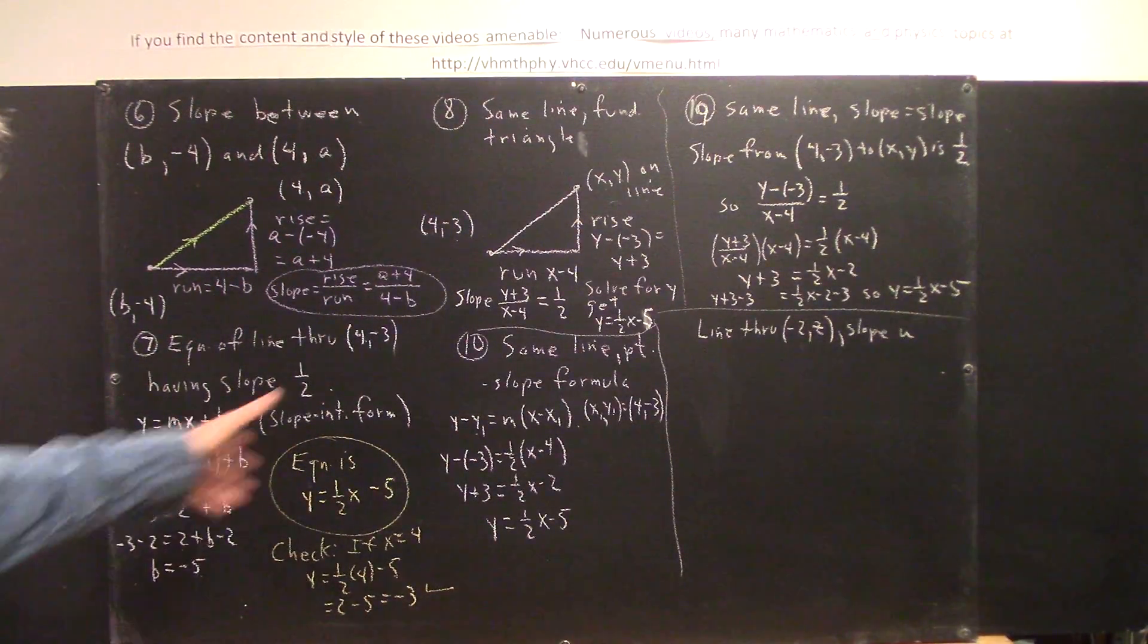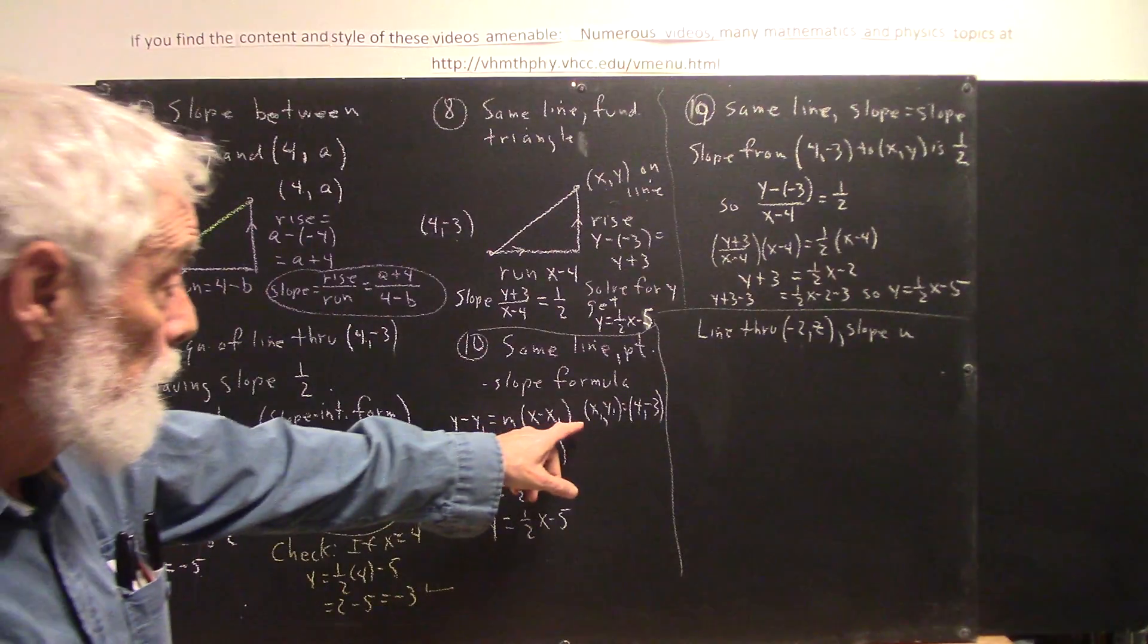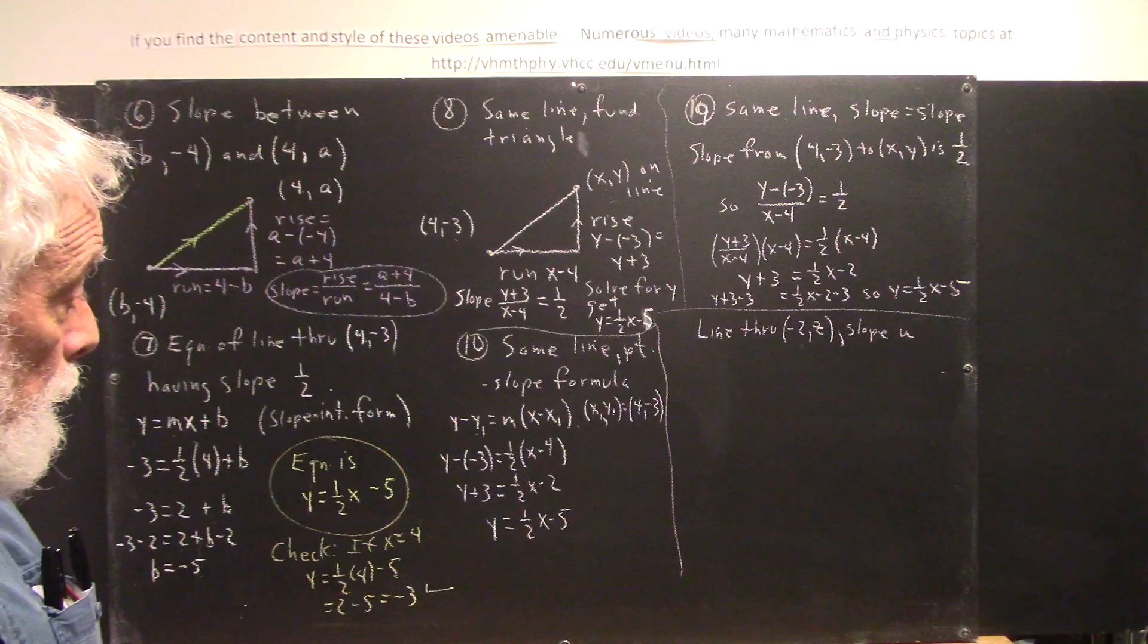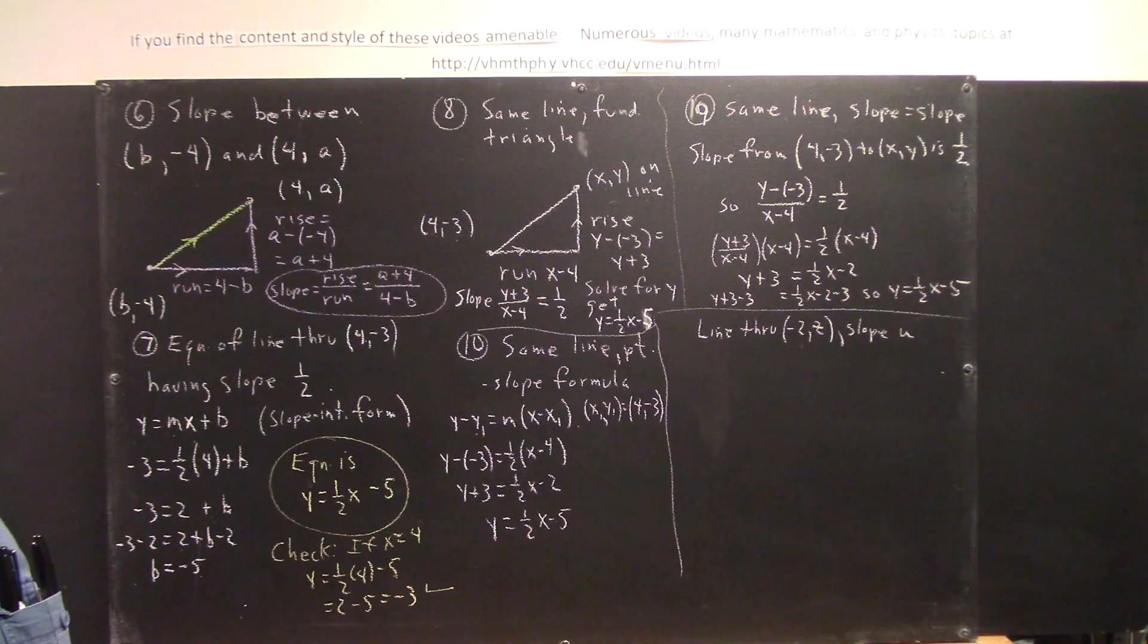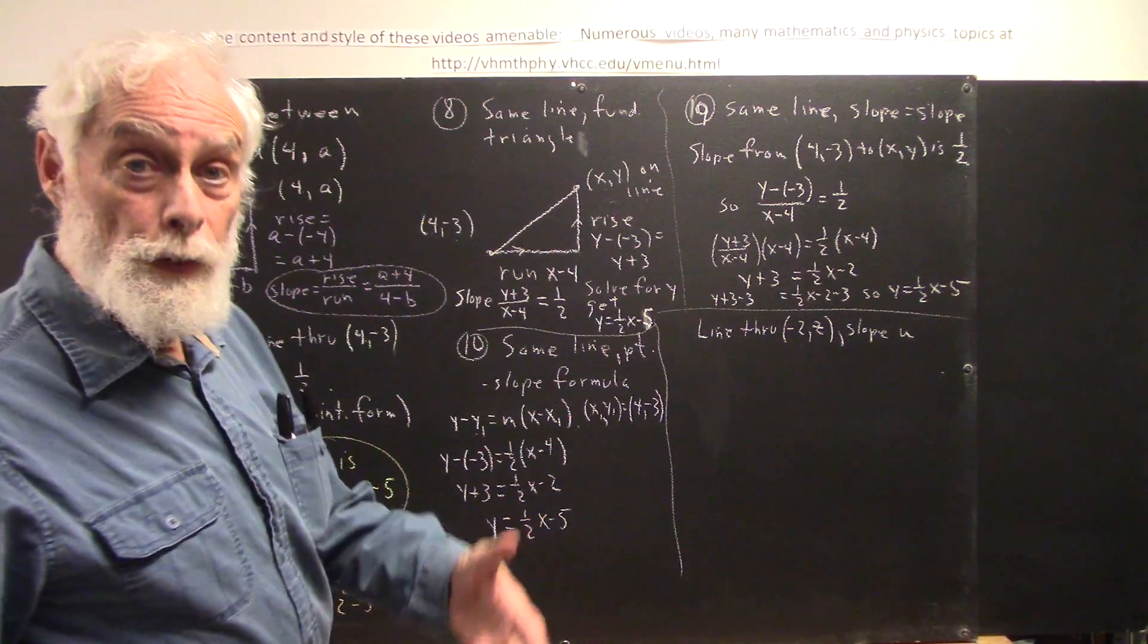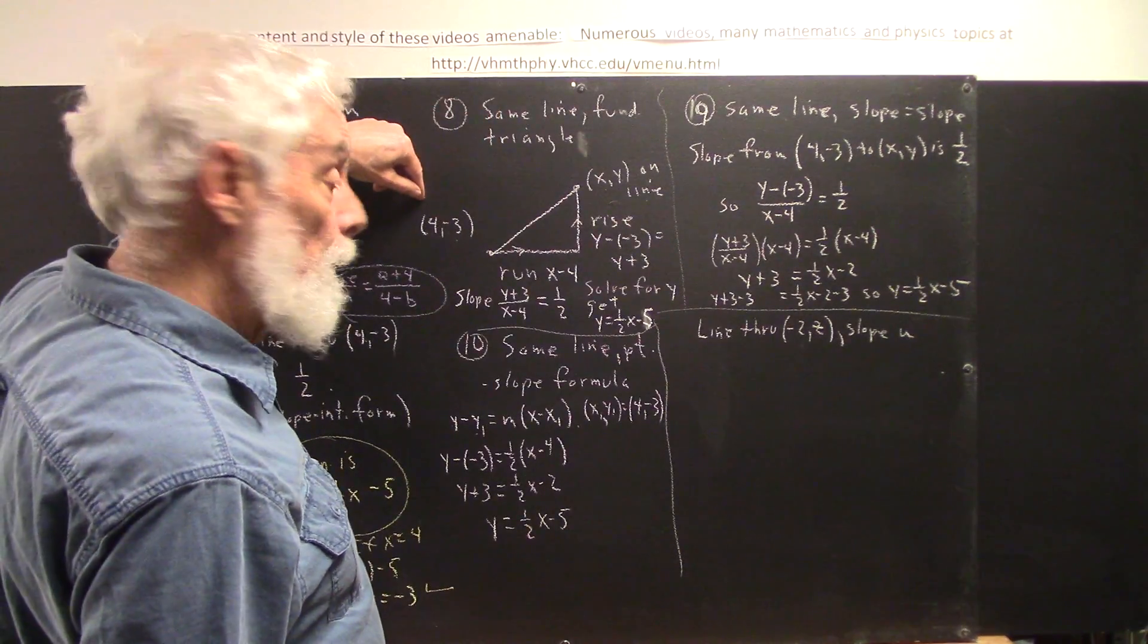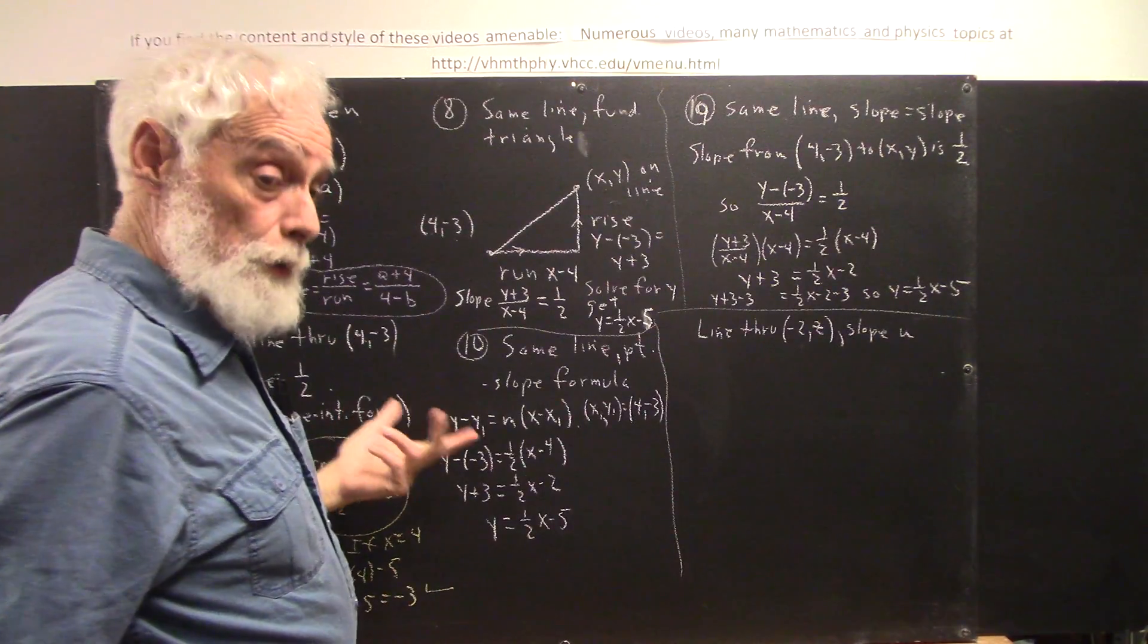Now, you might ask why I'm showing you all these different ways to find the equation of the line. Well, it's because if you can memorize this formula, you can always get the answer. But using the formula and getting the answer doesn't tell you anything about what's going on. It just gets the answer. And there are times when you need to know what's going on. So, one way to see what's going on is to understand this picture. As a matter of fact, this is the way to understand what's going on.